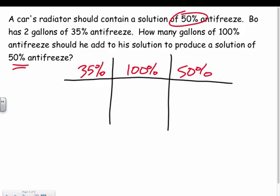For the amounts column: I know I have 2 gallons of the 35% mixture. I don't know how much of the 100% I'm adding, so that's x. The total mixture amount would be those two combined: x + 2. I also know the percent for each part.